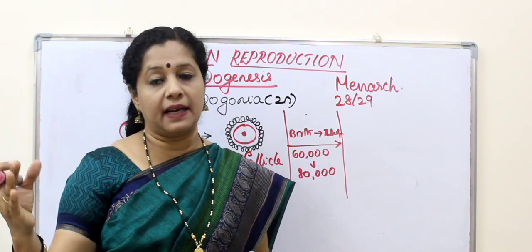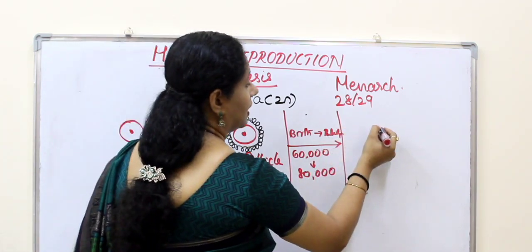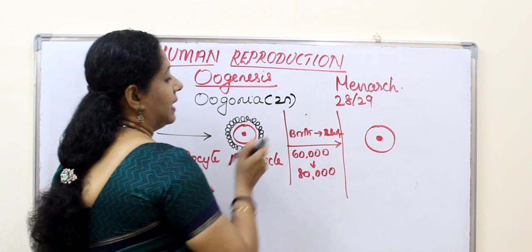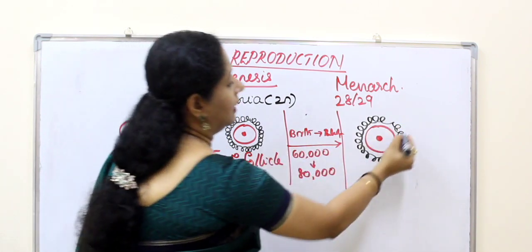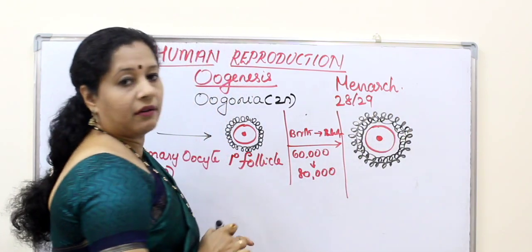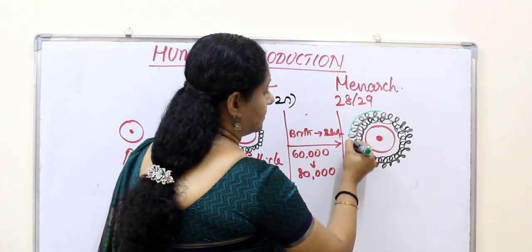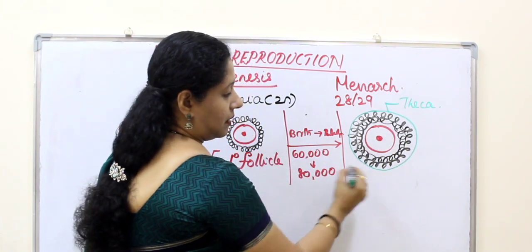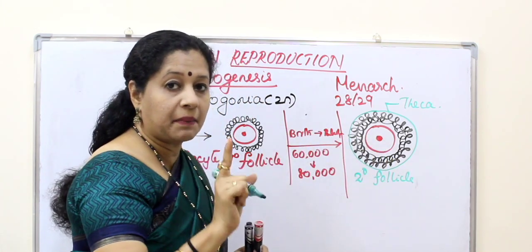A primary follicle will become a secondary follicle. During that stage it will accumulate more granulosa layers, and also develop a membrane outside called the theca. The cell inside the secondary follicle is still the primary oocyte.